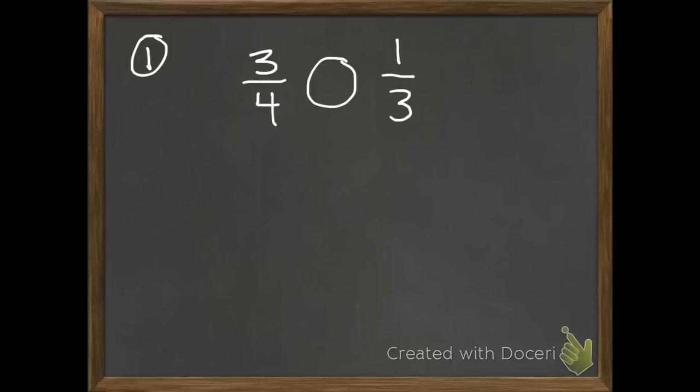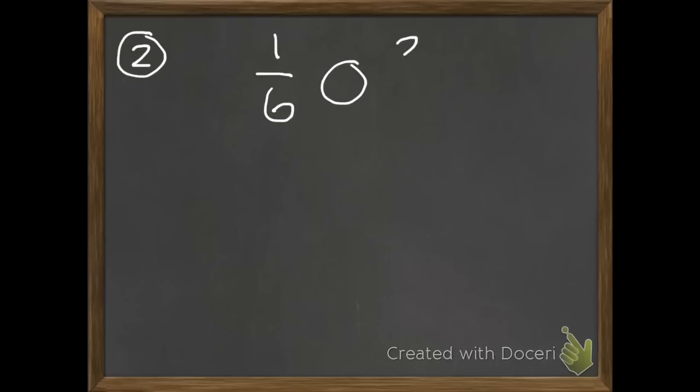Now we're to the problems you do on your own. Our strategy today is using number lines. Our least common multiples is still a really good strategy. If you want, you can use that to check your work. But today, we're going to focus on number lines. Draw a number line for three-fourths and a number line for one-third. And then put in the circle if it's greater than, less than, or if they are equal. Number two, same instructions. Greater than, less than, or equal. And do one-sixth and two-thirds.